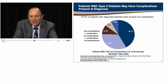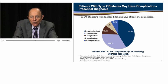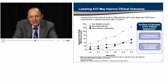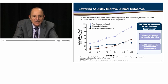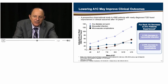Approximately 3 out of 5 people with type 2 diabetes aged 50 to 75 years, or 57.9%, had at least one or more complications. The data from the UKPDS study — a prospective observational study in patients with newly diagnosed type 2 diabetes — aimed to determine if improved glycemic control could reduce the risk of diabetic complications. This study showed that for every 1% decrease in A1C, there was a 37% reduction in microvascular risk and a 14% decrease in the risk of myocardial infarction.